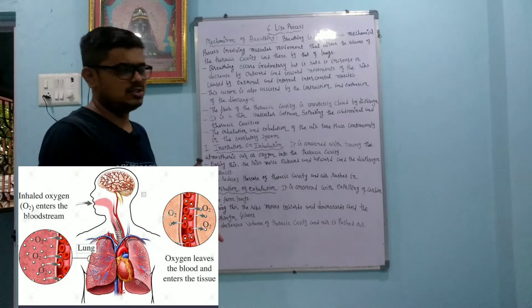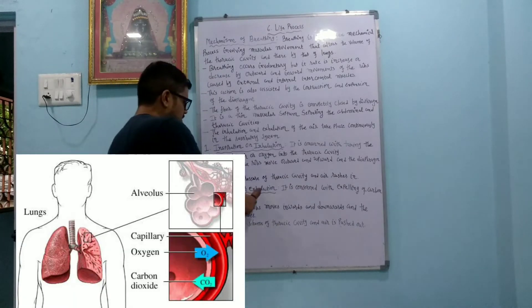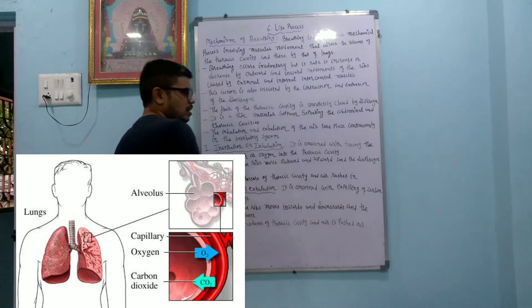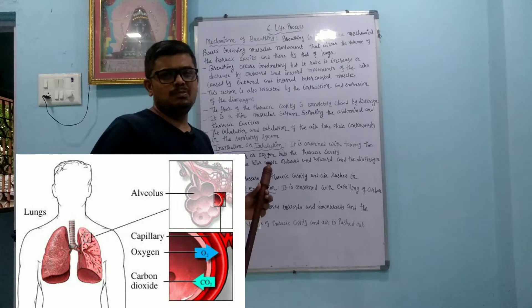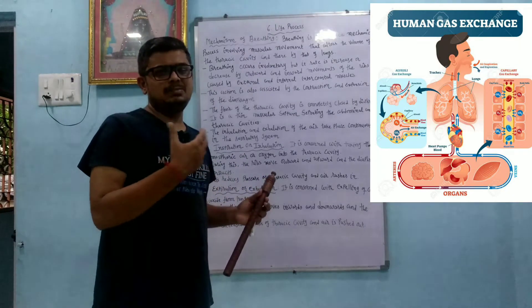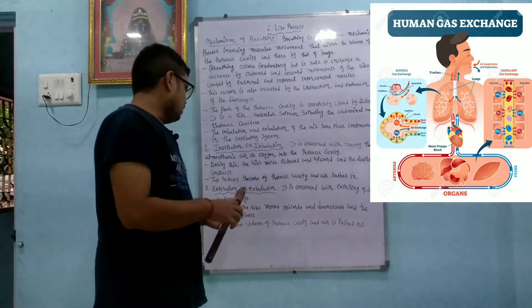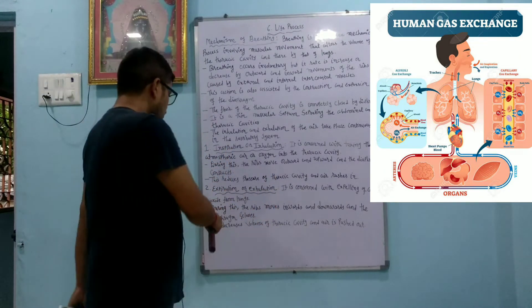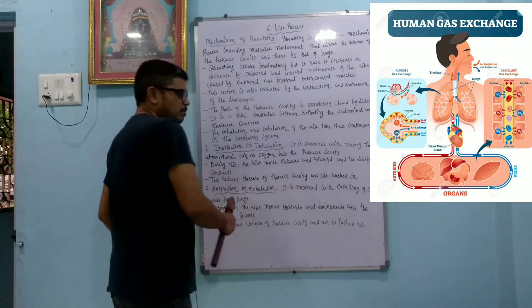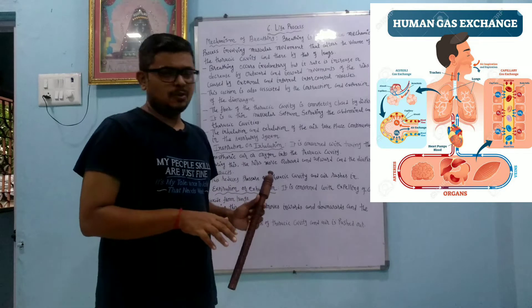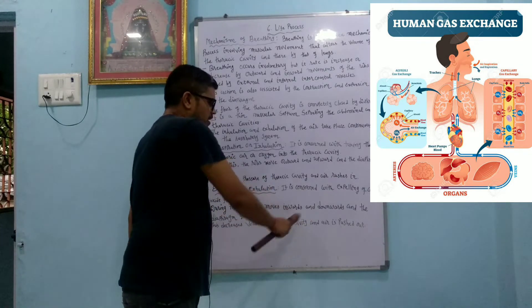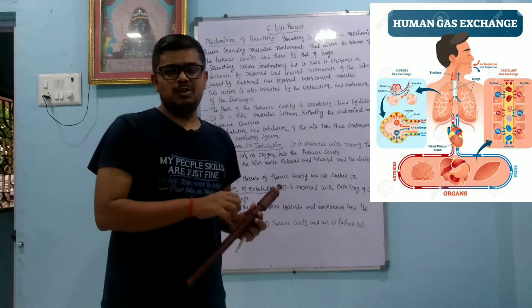The opposite happens in exhalation. During expiration or exhalation, carbon dioxide is expelled from the lungs. Whatever carbon dioxide is collected from different organs by the blood is expelled out. The ribs move inward and downward, the diaphragm relaxes, which decreases the volume of the thoracic cavity and air is pushed out.